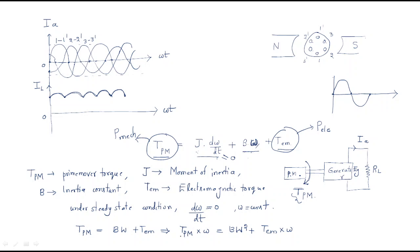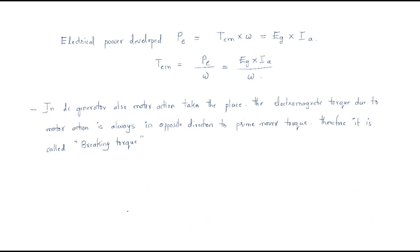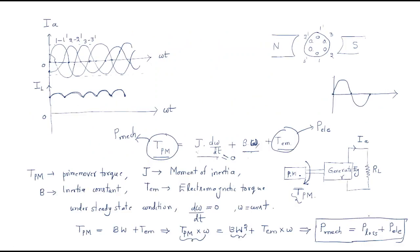So finally we can write: the prime mover power equals loss power plus electrical power. The complete mechanical power equals the losses plus the generated electrical power. We will use this electrical power to supply the load. This is the input and we get the output across the load.